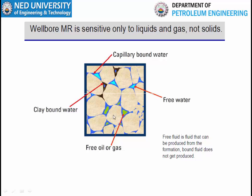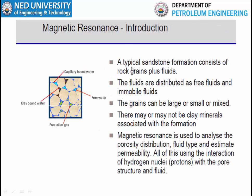We want to know how much free oil and gas we can produce from a formation, and how much water will invade the pay zone when pressure depletes. Free water will invade from the aquifer into the pay zone as pressure decreases due to production. As petroleum engineers, we are only interested in knowing the free fluids. Bound fluids do not contribute to flow and are generally present in the small pore spaces of the reservoir. Through NMR log we can differentiate between bound fluids and free fluids.